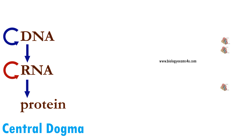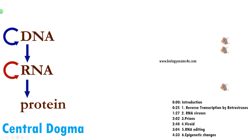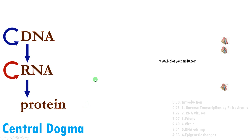In the last video we discussed the central dogma of molecular biology. In this video we are going to discuss the exceptions to central dogma of molecular biology. According to central dogma, DNA is transcribed to RNA and that is translated to protein — the sequence in DNA determines the sequence of amino acids in a protein. Now let us see the exceptions.